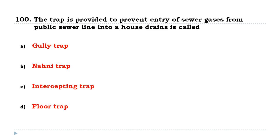The trap provided to prevent entry of sewer gases from public sewer lines into a house drain is called an intercepting trap.